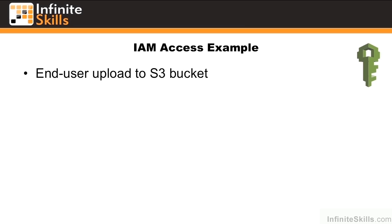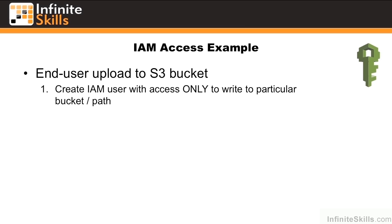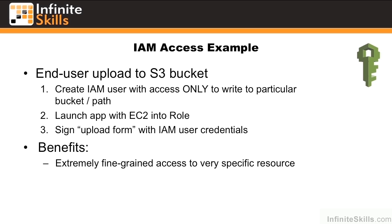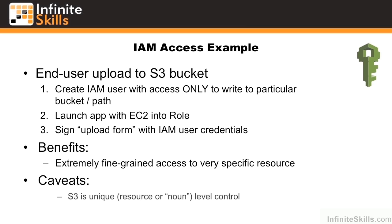Let's look at a user example. Let's say we want to allow end-user uploads to our S3 bucket. We would first create an IAM user with access only to a particular bucket and or path. We could then launch an EC2 server into that IAM user role, and applications inside of that server would be able to write to the S3 bucket. We could then sign an upload form with the IAM user's credentials and give that to the user, allowing access into that S3 bucket. The benefit is extremely fine-grained access control to a very specific resource. Note that S3 is a bit unique in that it allows resource or noun level control — most services don't allow this.